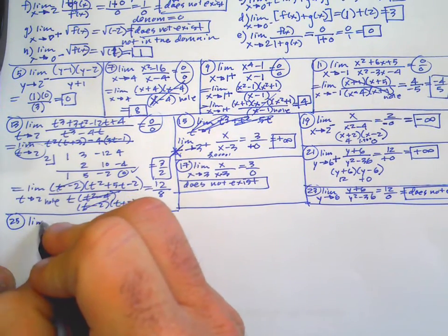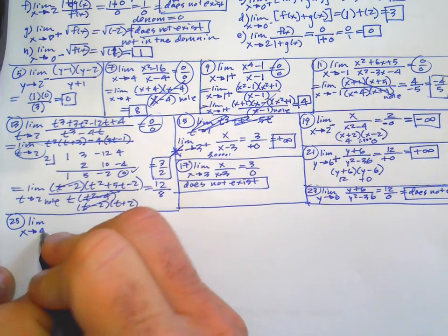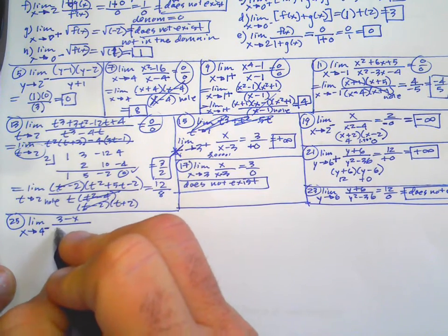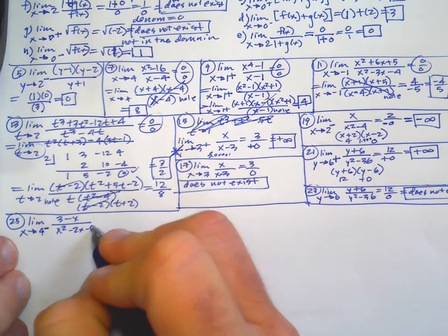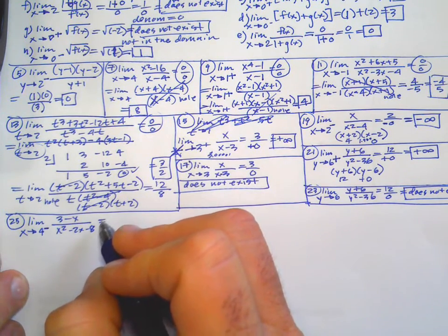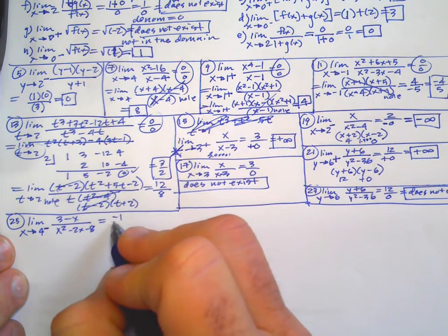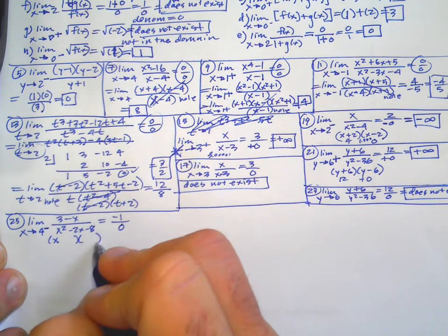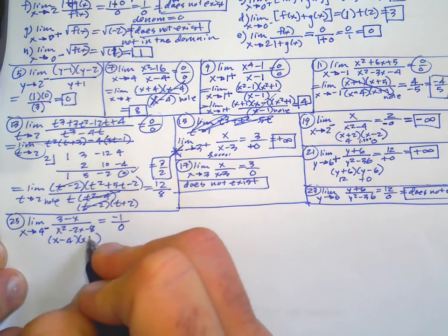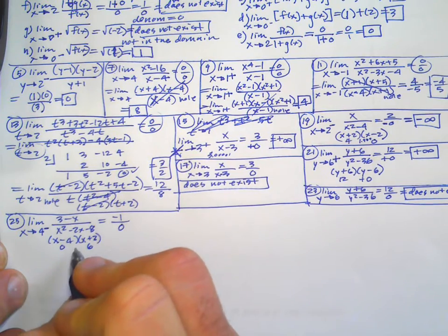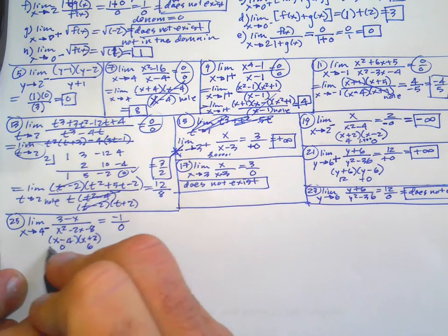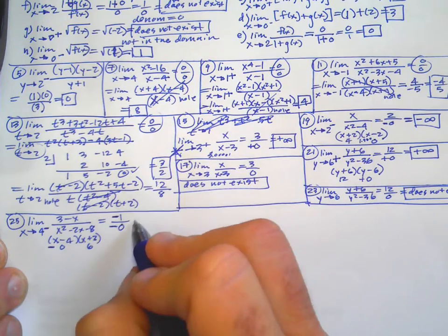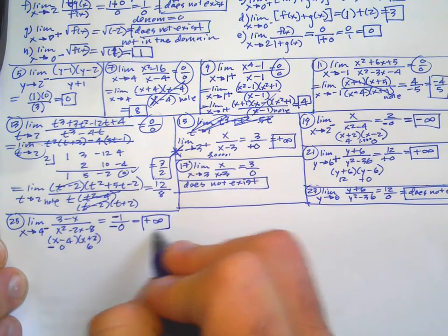Number 25: limit as X approaches 4 from the left of (negative 3 minus X) over (X squared minus 2X minus 8). Plug 4 in — that's negative 1 over 16 minus 8 minus 8, which is 0. Factoring the denominator: (X minus 4)(X plus 2). The factor going to 0 is (X minus 4), and we're approaching 4 from the left, so that's like 3.999 — a very small tiny negative number. But the top is also negative, so it actually goes to positive infinity.